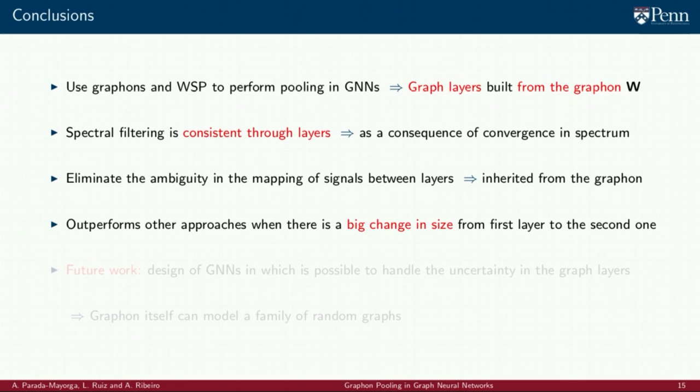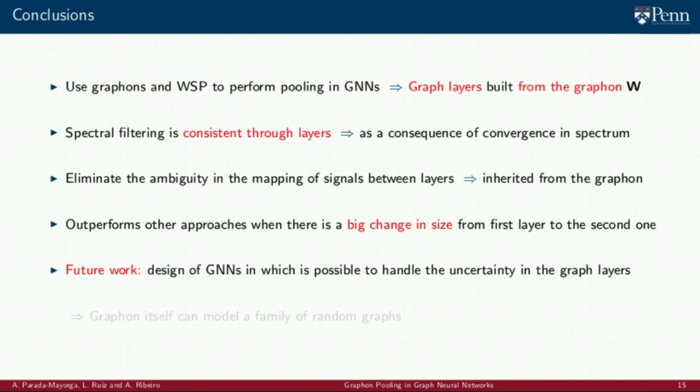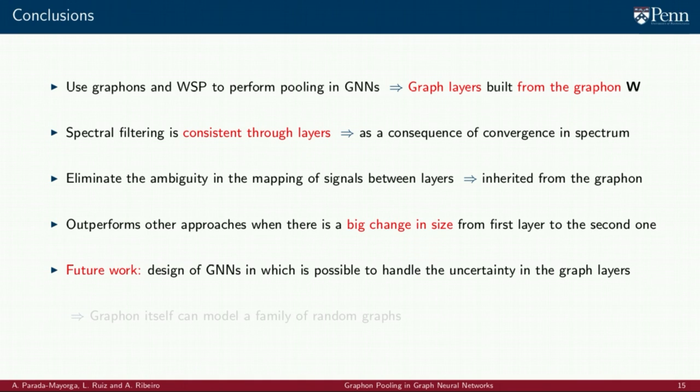We observe in our experiments that graphon pooling outperforms other approaches when there is a significant change in the size of the graphs between layers. We remark that in future works graphons can also be used to handle uncertainty in graph layers, assuming that the graphs in the layers are realizations of a random model based on a graphon.